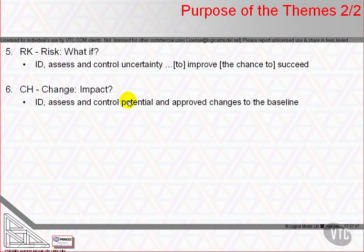Sixth is the change theme. The change theme describes how PRINCE2 assesses and acts on issues which may impact on any aspects of the project's baseline of agreed plans and completed products. In PRINCE2, issues may be any of unanticipated general problems, requests for change, instances of quality failure, or questions raised by anyone at any time. It answers the question: what's the impact? And sometimes the answer is not much. In those circumstances, we'd like the cost of the change activities to be low through use of informal methods.